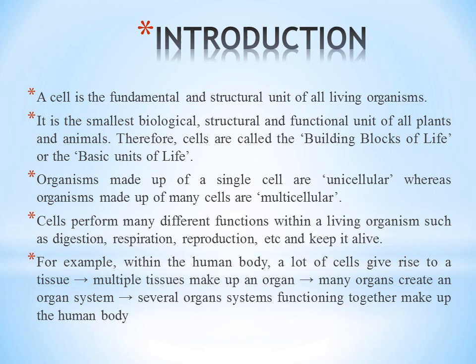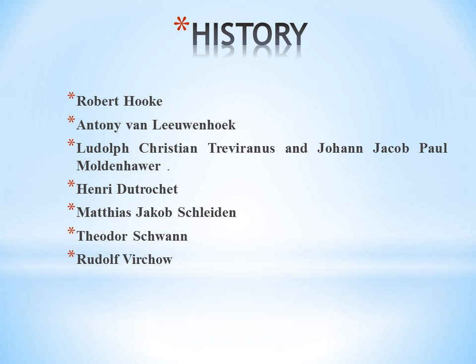Looking at the history, the first name is Robert Hooke. He discovered the cell in 1665. He examined very thin slices of cork and saw a multitude of tiny pores that he remarked looked like the walls of the compartments of a honeycomb.